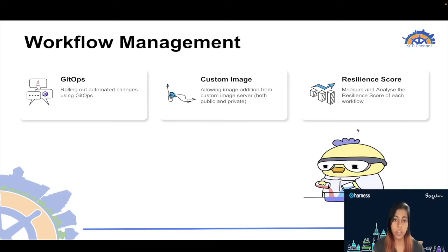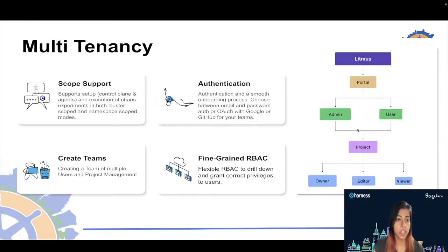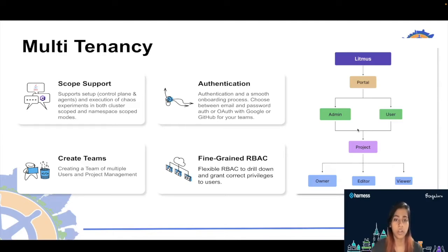Litmus allows you to add your own image from a custom image server, which can be public or private. Once chaos injection is done, you can measure and analyze the resilience score of each workflow to see how your application performed. Litmus also supports multi-tenancy — you can create your own team, invite other users as viewer or editor, and it has fine-grained role-based access controls.